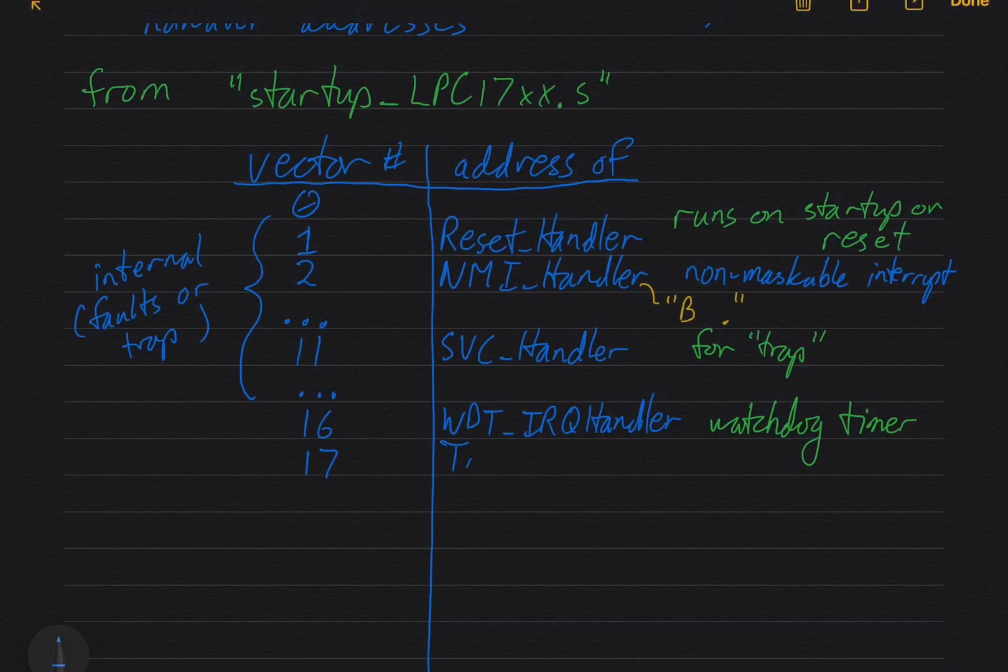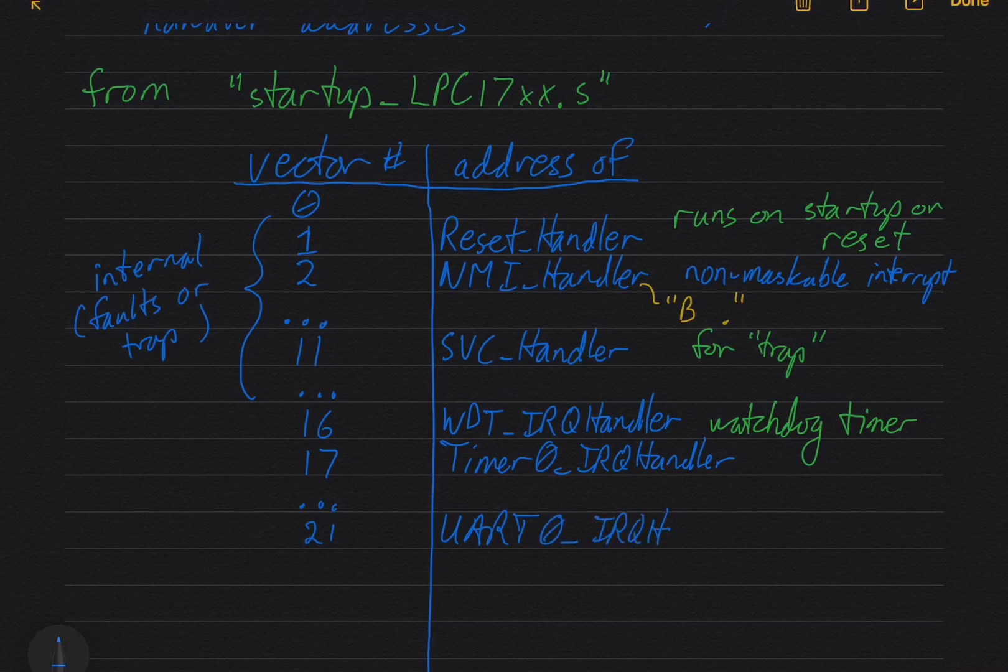Vector 17 is for timer zero. Vector 21 is for UART zero. Vector 37 is for external interrupt three.